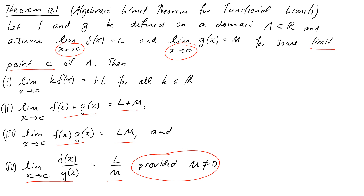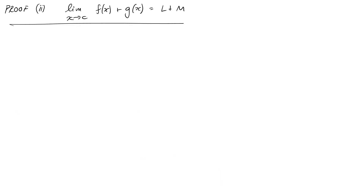We're not going to prove all of these — we'll just prove a couple, perhaps two and four, because once you've seen these two you can see pretty much how the other two are going to work as well. What we really want to do is take advantage of our algebraic limit theorem for sequences somehow. We're going to use the sequence characterization of limits to turn this into a statement about sequences, because hopefully we can just use the algebraic limit theorem for sequences to get the result we want.